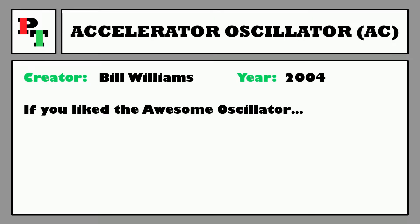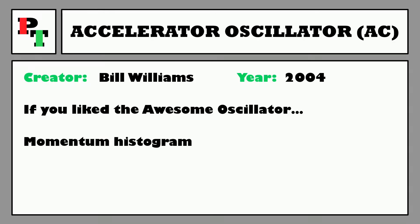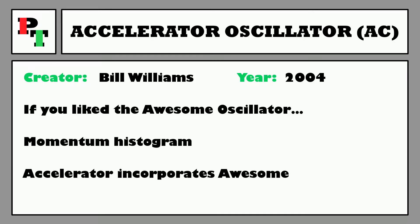If you are familiar with the Awesome Oscillator and you like that one as an indicator, then you are going to love the Accelerator Oscillator. If you hate the Awesome Oscillator, then this one might make you seethe just a little bit. Much like the Awesome Oscillator, the Accelerator Oscillator is a momentum indicator which presents itself as a histogram with a zero line crossover. And here's the big secret: the Accelerator Oscillator incorporates the Awesome Oscillator into its formula.